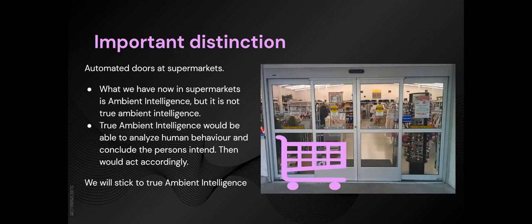The important distinction is between true ambient intelligence and not-true ambient intelligence. What we have nowadays would be like an automated door at a supermarket. If you stand near it, the door will sense you and it will open automatically. So there is the first point of the definition, which is that there is no manual input and an action is taken by the device itself.